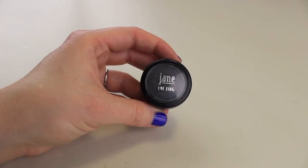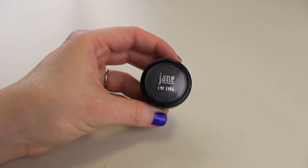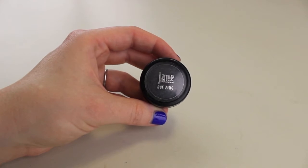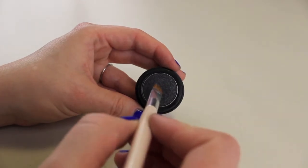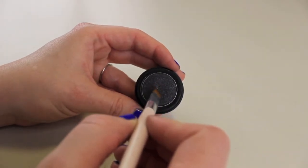Let's go ahead and get into today's video. First, obviously, you want to grab your eyeshadow. I'm just using a basic black eyeshadow from Jane Cosmetics. Today, I'm going to show you three different ways to use eyeshadow and create eyeliner.